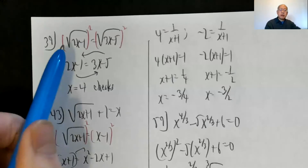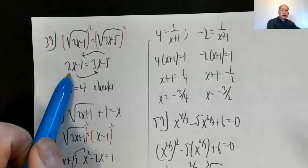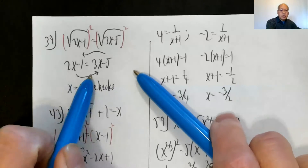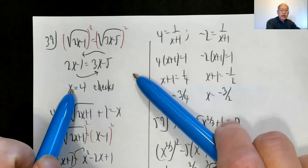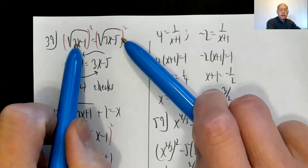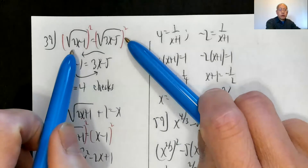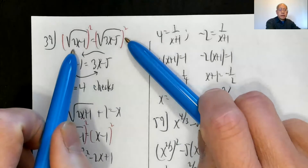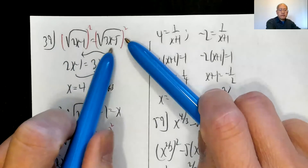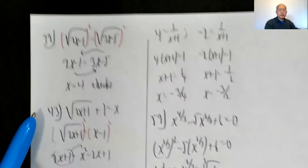For the problem involving radicals, square both sides. Two x minus one equals three x minus five. Subtract two x and add five: x equals four. Checking: two times four is eight minus one is seven, and three times four is twelve minus five is seven. The square root of seven equals the square root of seven — it checks.